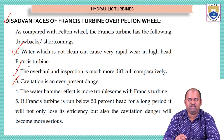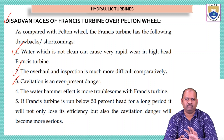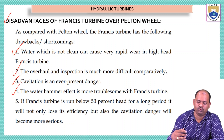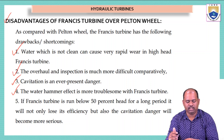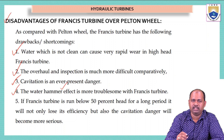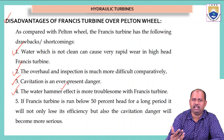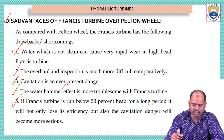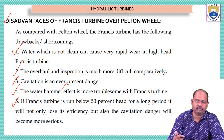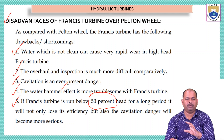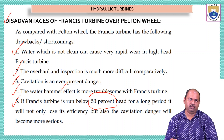Third disadvantage is cavitation, which is an ever-present danger in the Francis turbine — we will study this in coming lectures. Fourth, the water hammer effect is also a danger that can cause the Francis turbine to malfunction or damage mechanical parts and must be controlled. Fifth, if the Francis turbine runs below 50% of the operating head for a longer period, it will not only lose efficiency but the cavitation danger also becomes more serious, and the turbine may need to be replaced.